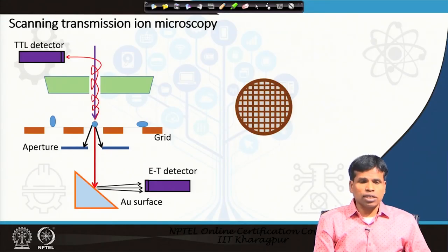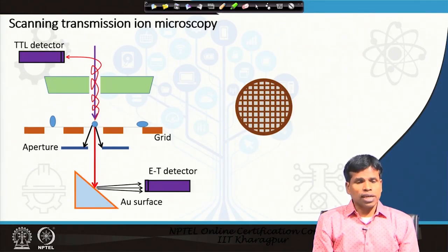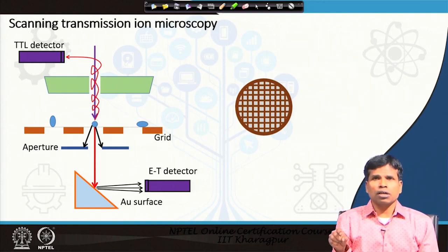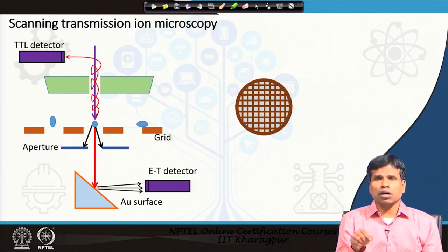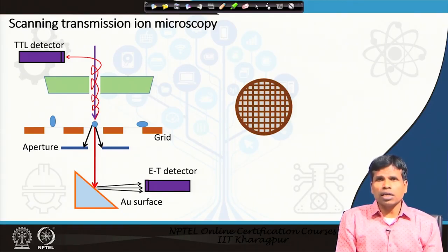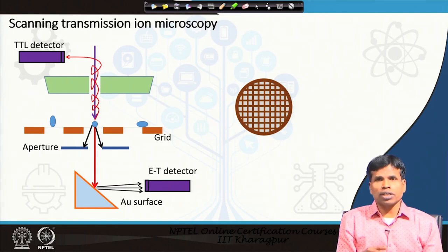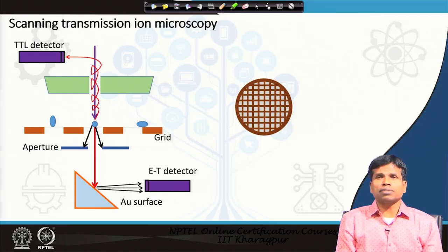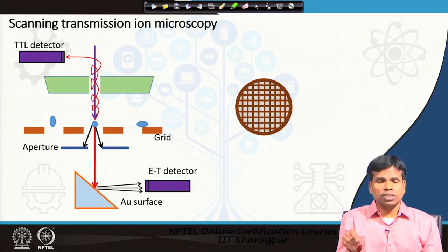First, let us talk about scanning transmission ion microscopy. As the name suggests, scanning means the ion beam has to scan on the specimen, and transmission means the ions should transmit through the sample. The image formed is nothing but a transmission image. Similar to scanning transmission ion microscopy, we have scanning transmission electron microscopy — when an electron beam passes through the sample it is called TEM, and when it scans across the sample it is called STEM. Both are similar in type.